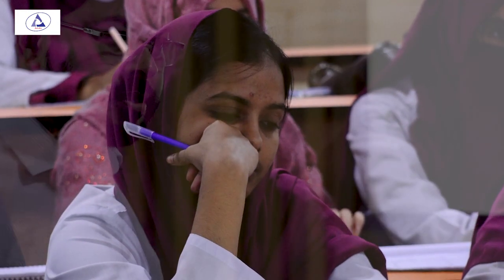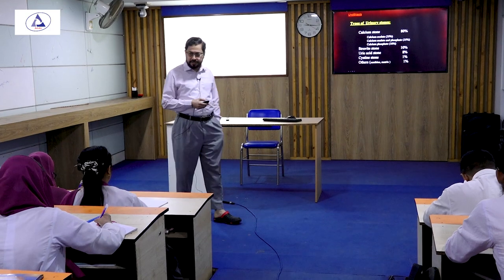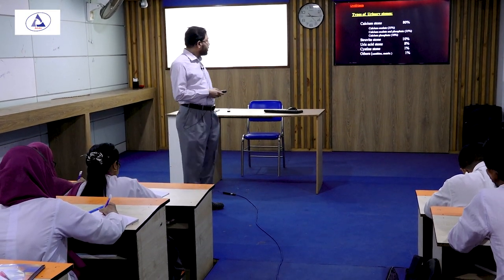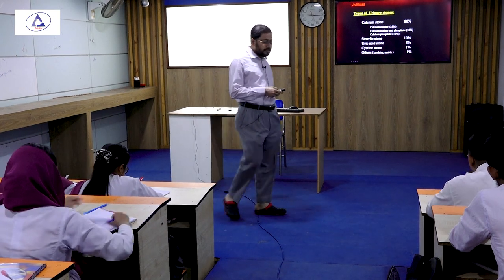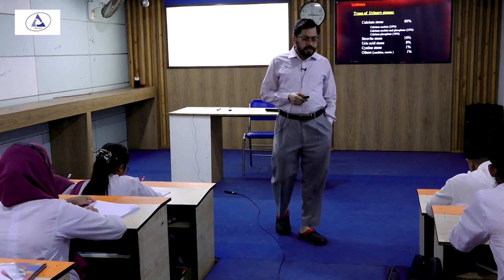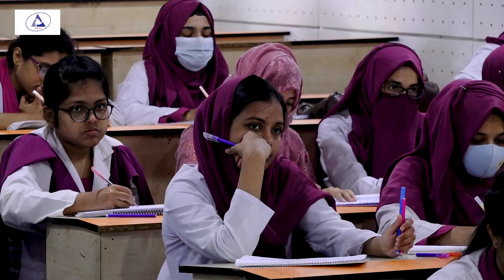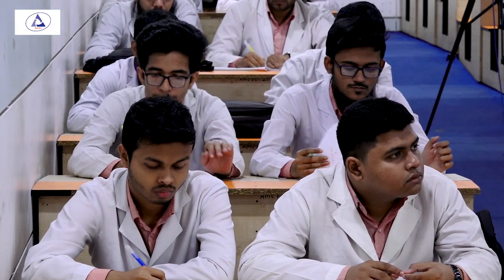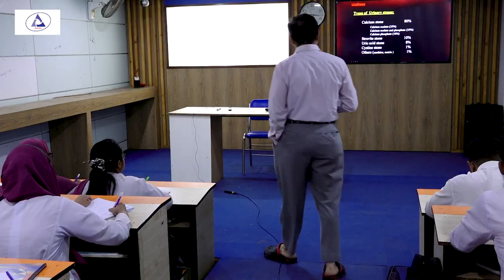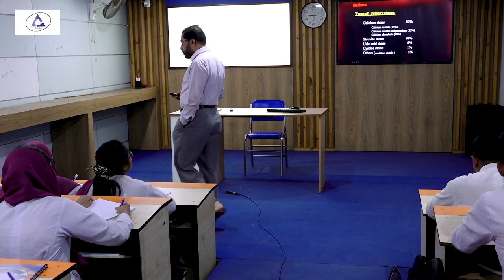We know the types of urinary stones: calcium stones, struvite stones (that means triple-phosphate stones), uric acid stones, and cysteine stones. Calcium stones account for 80%, and together calcium and struvite stones make up about 90% of all urinary stones.